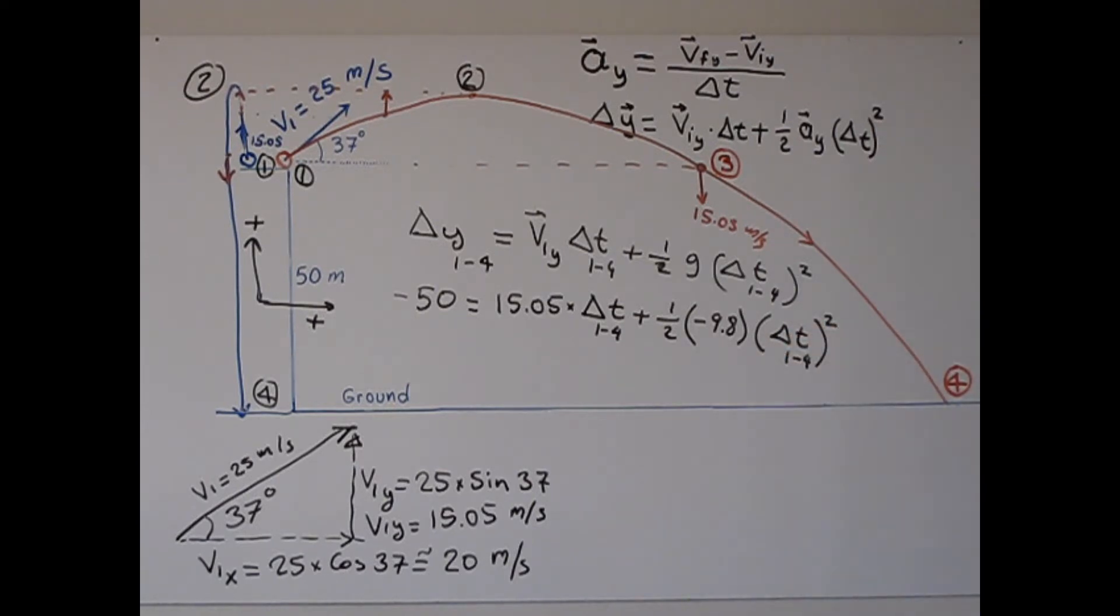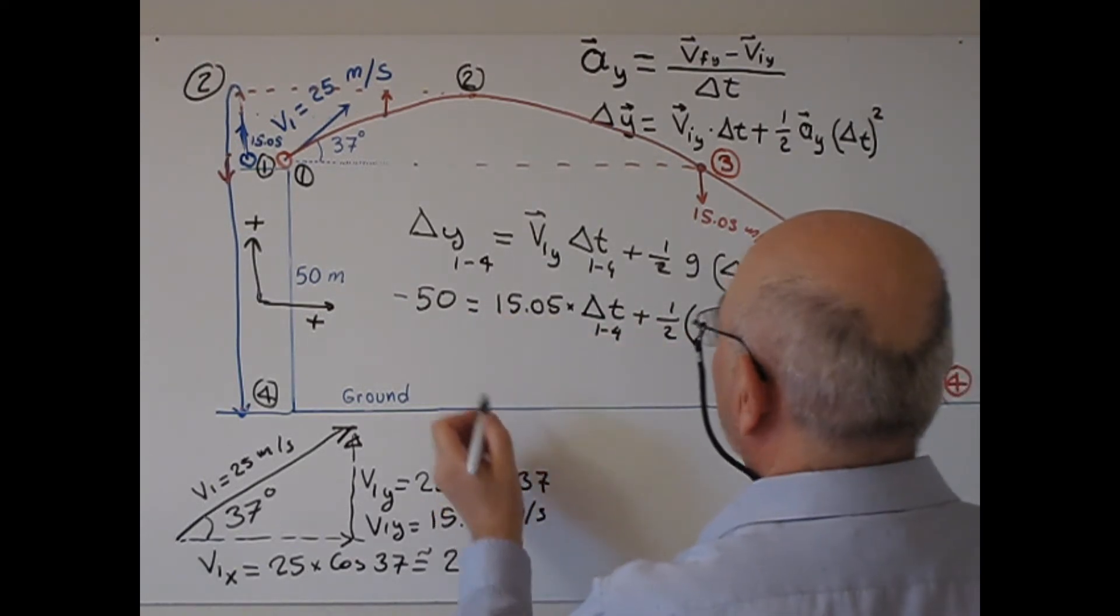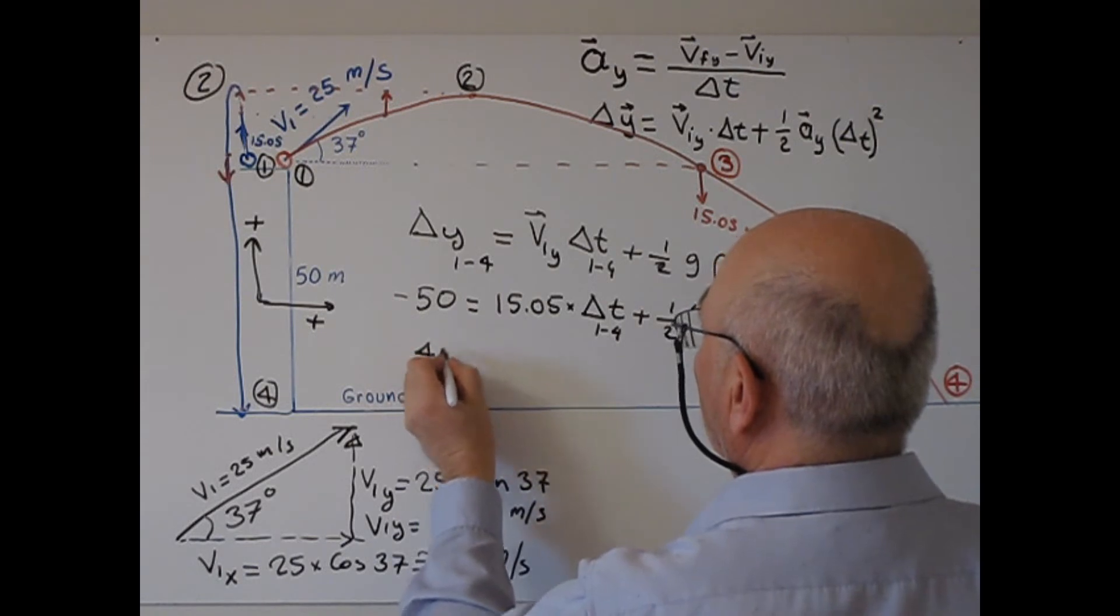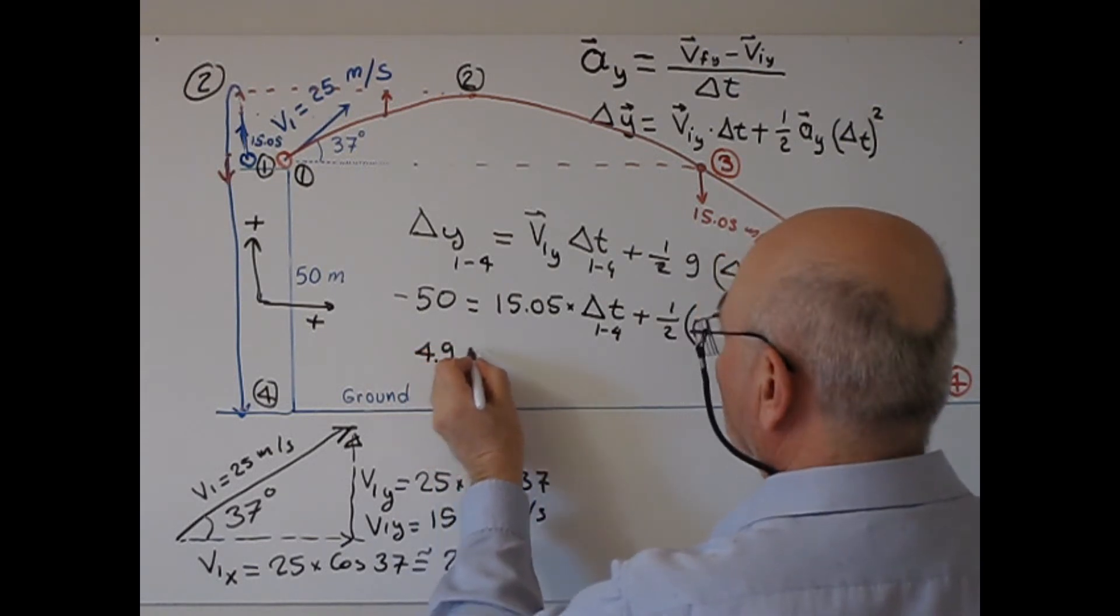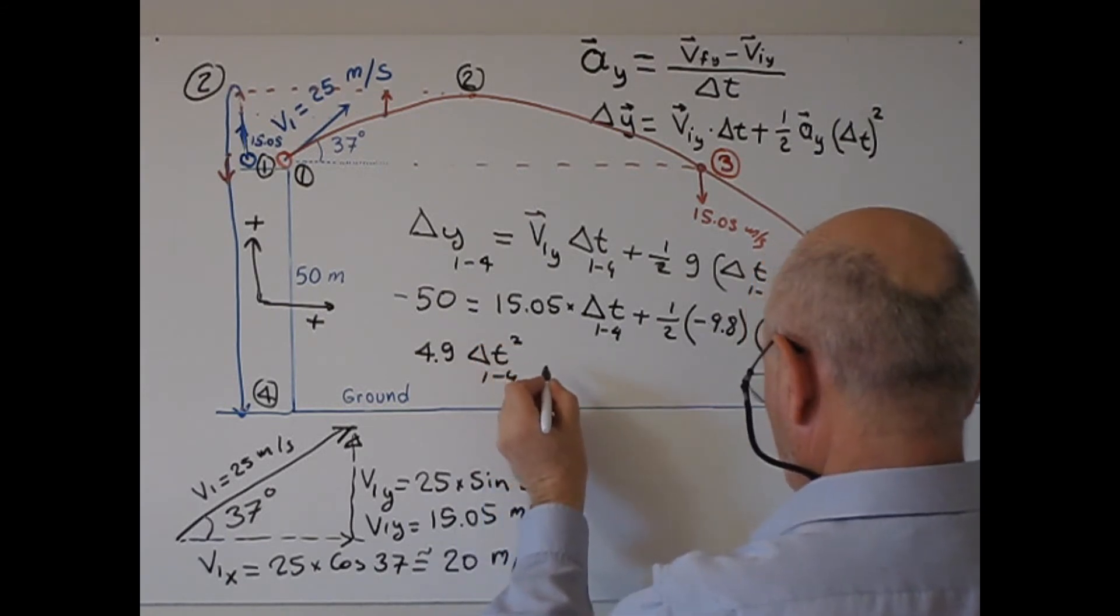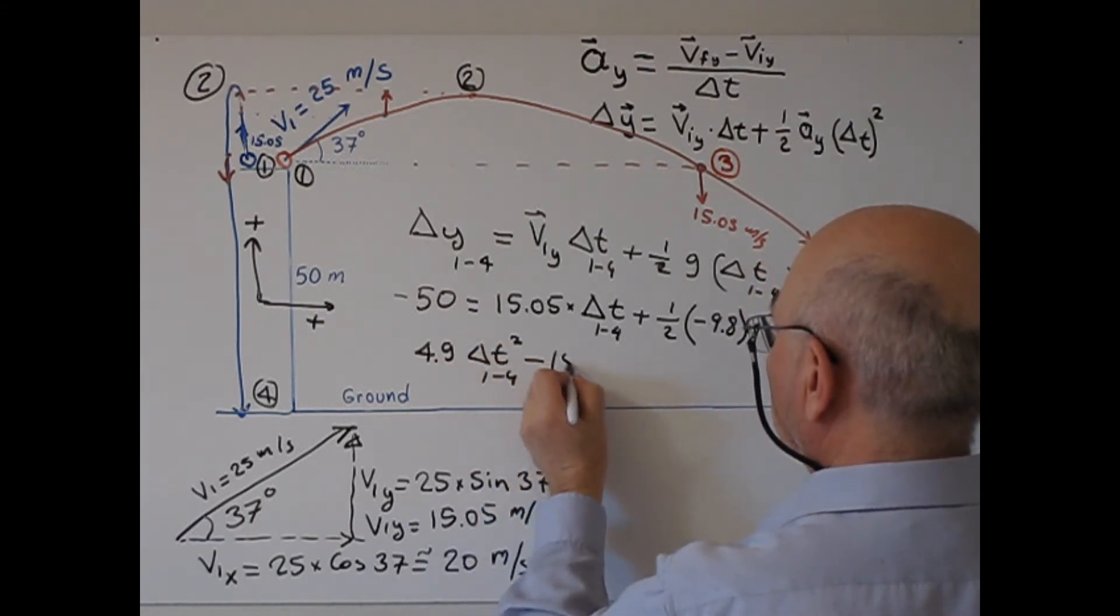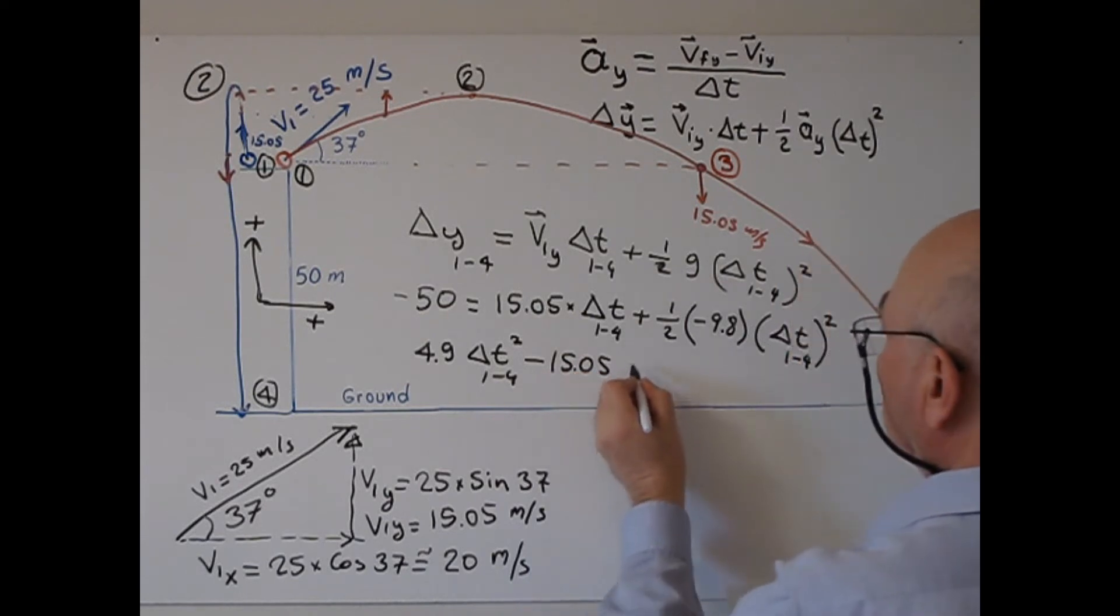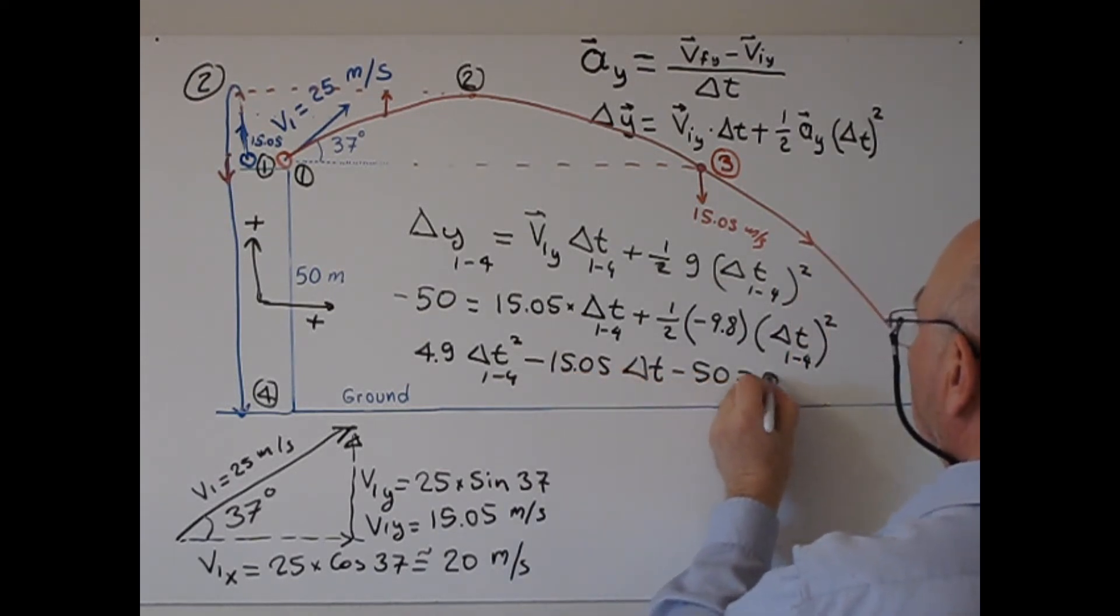This is the formula. When I rearrange this formula, everything to the left, I get 4.9 delta t14 squared minus 15.05 delta t minus 50 equals zero.